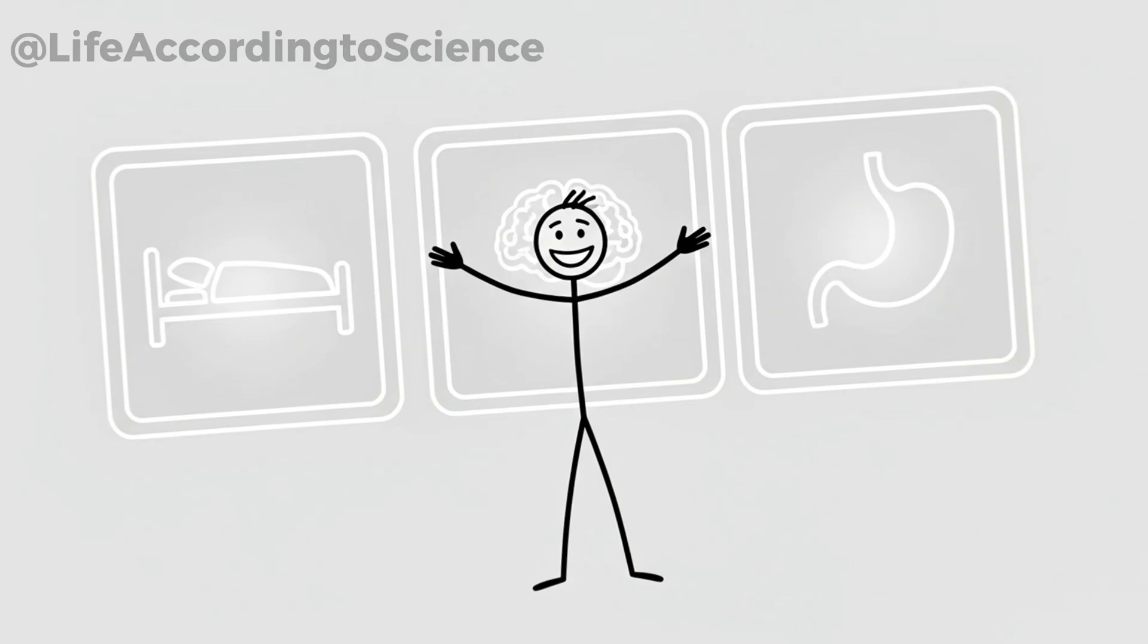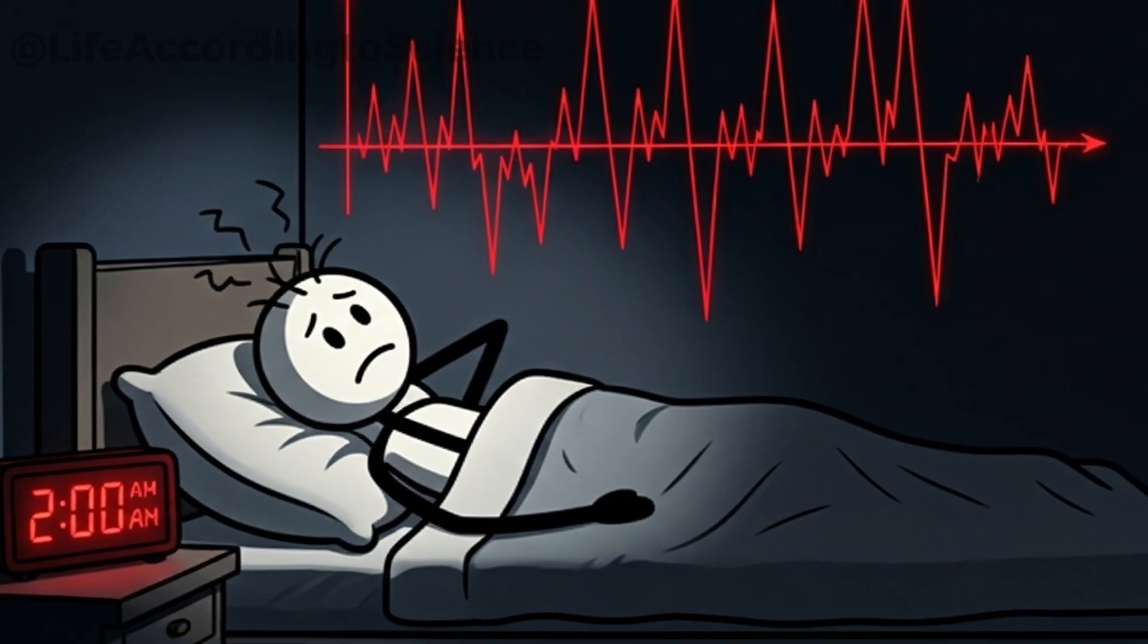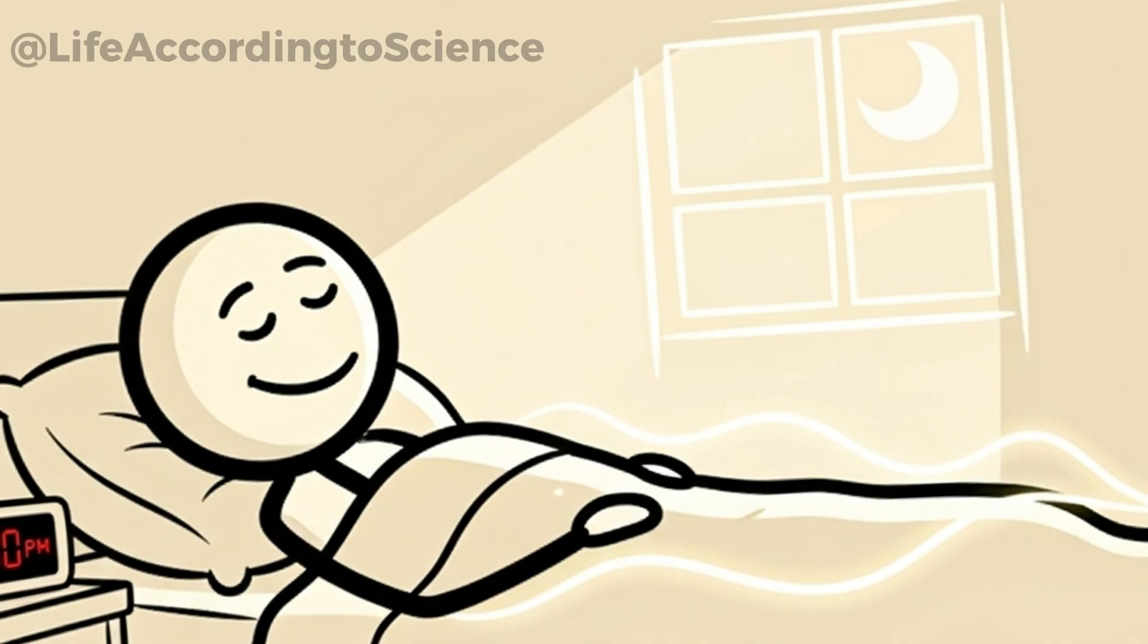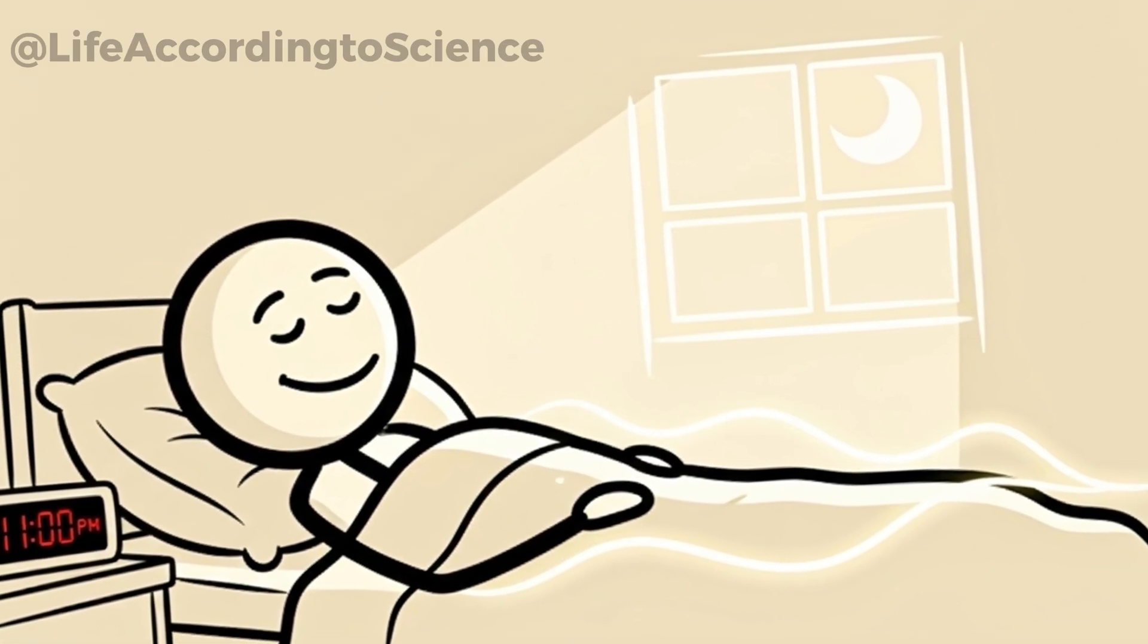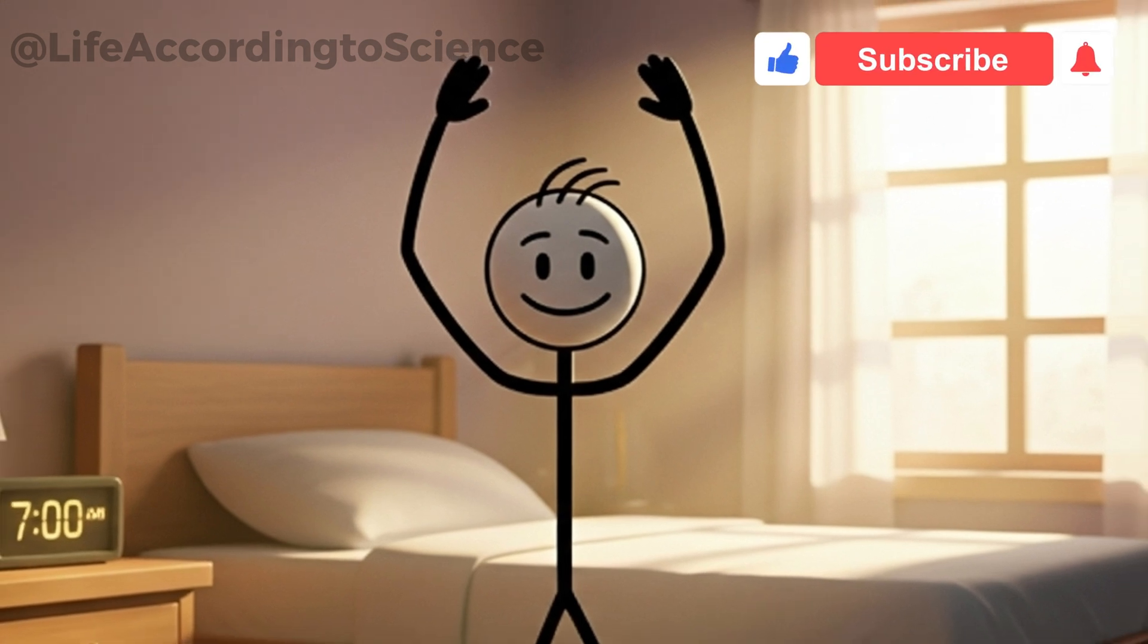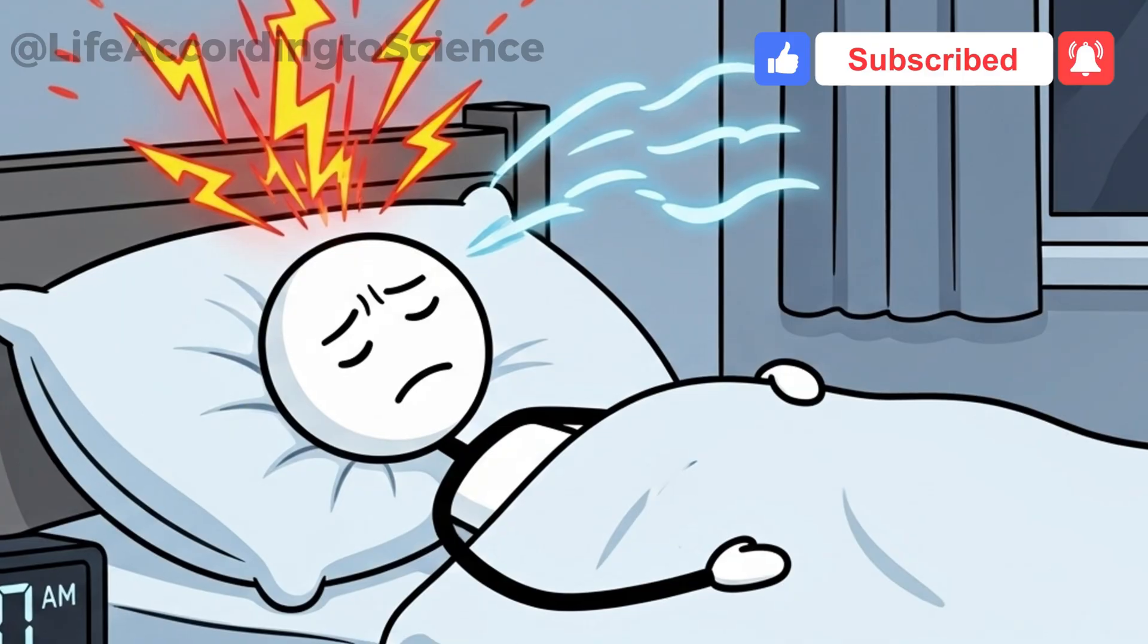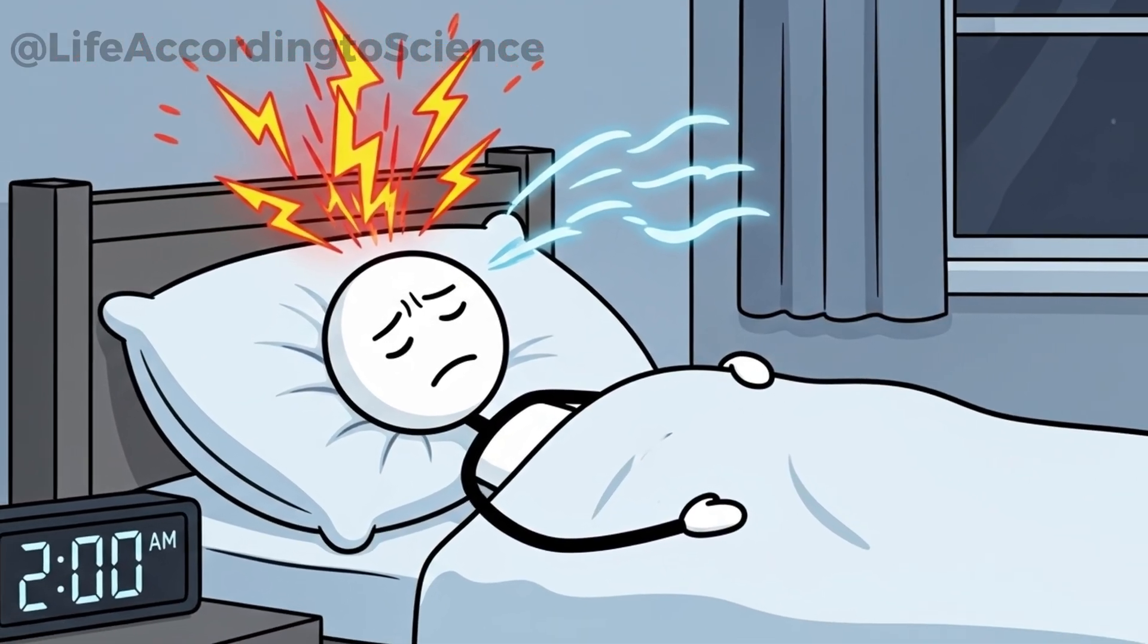Sugar impacts sleep more than most people realize. Frequent spikes and crashes in blood sugar levels can keep you tossing and turning at night. When you cut sugar, your body regains stability, and your sleep starts to improve. By the second week, many people report falling asleep faster and staying asleep longer. That groggy, heavy feeling in the morning? It begins to fade as your body gets real rest. This happens because stable blood sugar levels prevent the midnight adrenaline rushes that often jolt people awake.